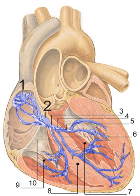Cardiac muscle has some similarities to neurons and skeletal muscle, as well as important unique properties. Like a neuron, a given myocardial cell has a negative membrane potential when at rest. Stimulation above a threshold value induces the opening of voltage-gated ion channels and a flood of cations into the cell. The positively charged ions entering the cell cause the depolarization characteristic of an action potential. Like skeletal muscle, depolarization causes the opening of voltage-gated calcium channels and release of Ca2+ from the T-tubules.